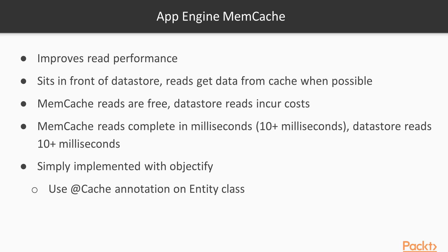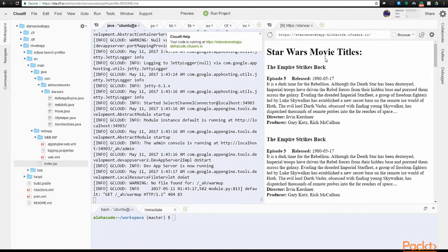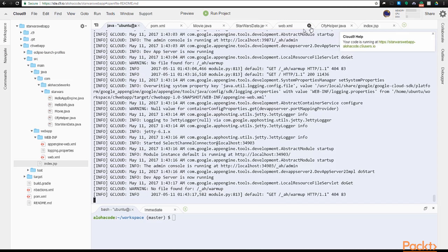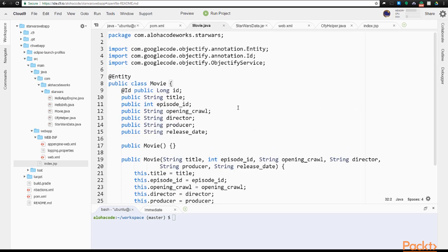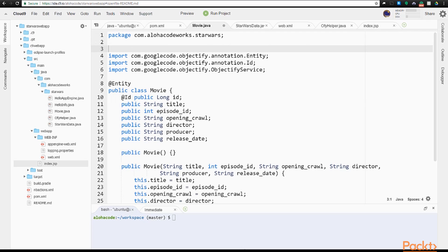Interestingly enough, in Memcache the fields of an entity are cached, not the POJO class itself — only the data of a POJO is cached, not methods and logic. Query operations are not cached, so only when entities are retrieved by their key are they eligible for the cache. So with the code we have in our app at this point, Memcache will not be utilized as we are accessing our movie data only through a query. As we move further into the videos of this section, we'll see the benefits of this Memcache implementation and how it will keep our costs down and performance up.